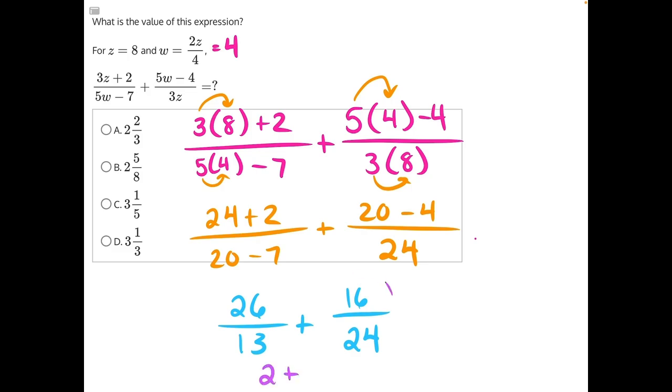And we know that whatever we simplify this fraction to be, it is going to be less than 1 because the numerator is less than the denominator. So we know that our whole number in our final answer should be 2. And that will allow us to eliminate answer choice C and answer choice D.